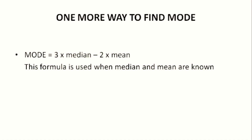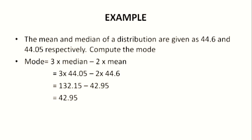There is another way to find mode. If median and mean are given, mode can be calculated using the formula: mode = 3 × median − 2 × mean. This formula can be applied only when median and mean are known. Example: the mean and median of a distribution are 44.6 and 44.05 respectively. Mode = 3 × 44.05 − 2 × 44.6 = 132.15 − 89.2 = 42.95.